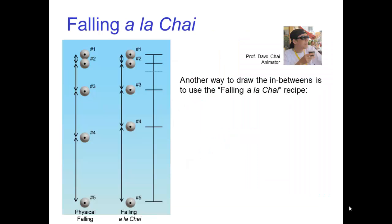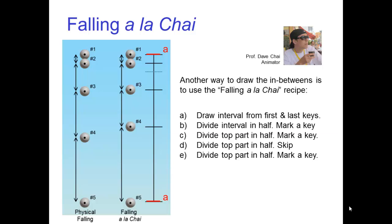Another way to draw the in-betweens is to use the falling a la chai recipe. First draw the interval from the first and last keys. Divide the interval in half and mark a key. Then divide the top part in half and mark another key. Divide the top part of that in half and skip, no key here. Finally, divide the top part of that in half and mark one more key. This gives you the breakdown drawings plus the two in-betweens. The lower in-between is going to be slightly too high, but no one will notice.